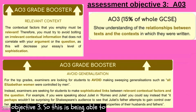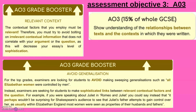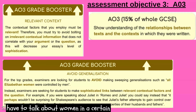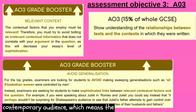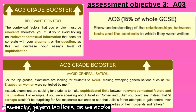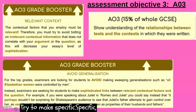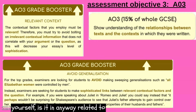Assessment Objective 3 is being able to show and understand the relationship between context. Here are two grade boosters: they must be relevant — do not think you have to talk about women in a certain era for every single essay. Try to be variable and instead of saying 'the original audience', say 'the contemporary audience', which means the audience that would be watching at the time it was made. Also, avoid generalisation — avoid making sweeping generalisations such as 'all Elizabethan women'. Try to make specific, sophisticated links between relevant contextual factors and the question. Whenever you're trying to include context, always ask yourself: is it in any way related to the question? And if it isn't, don't include it.